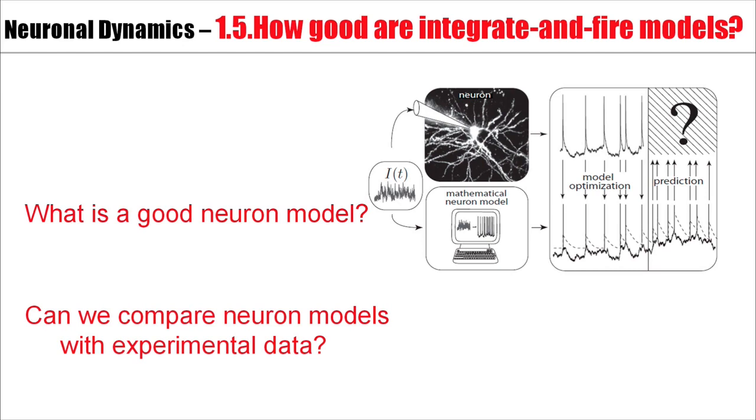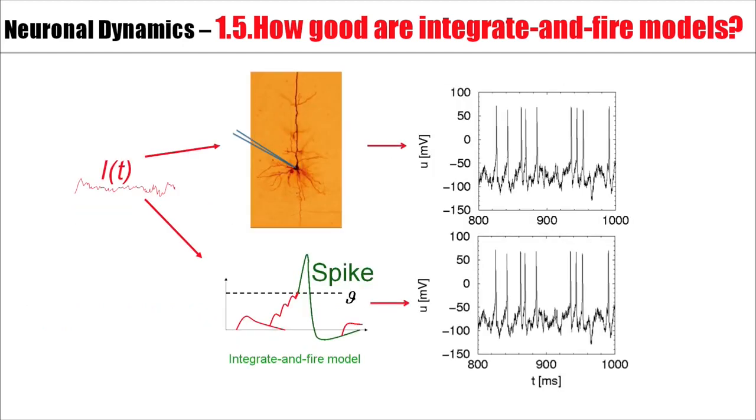What is a good neuron model? Ideally, if I inject the same current into a real neuron and into my neuron model, an integrate-and-fire model, I would like the model to predict the spike timings correctly, spike by spike.